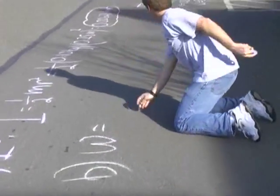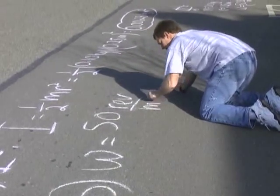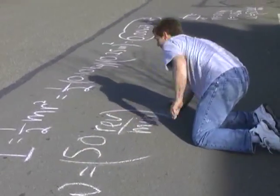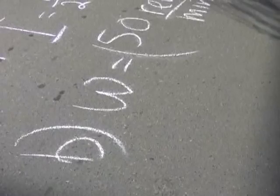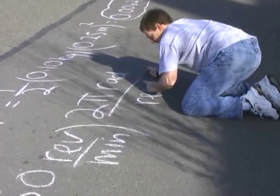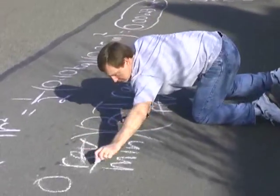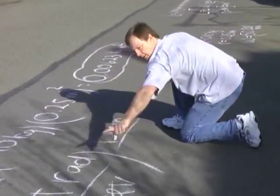So now we'll figure out the angular velocity. The angular velocity is in revolutions per minute — we've got to get it in radians per second. The angular velocity is 50 revolutions per minute. I've got to convert to radians, so I've got 2 pi radians in a revolution. Revolutions cancel.